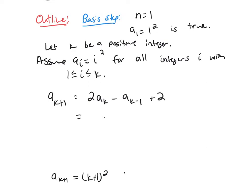So this is 2k². Now use our hypothesis here. This is true for all values of i between 1 and k. So in particular for a_k, it would be k². For a_{k-1}, it'll be (k-1)².